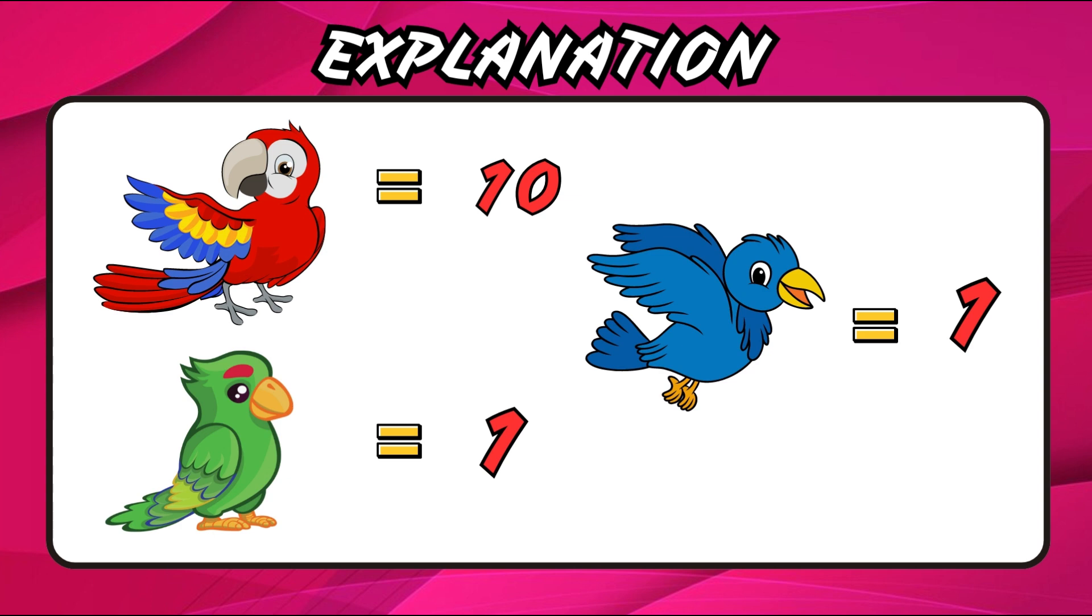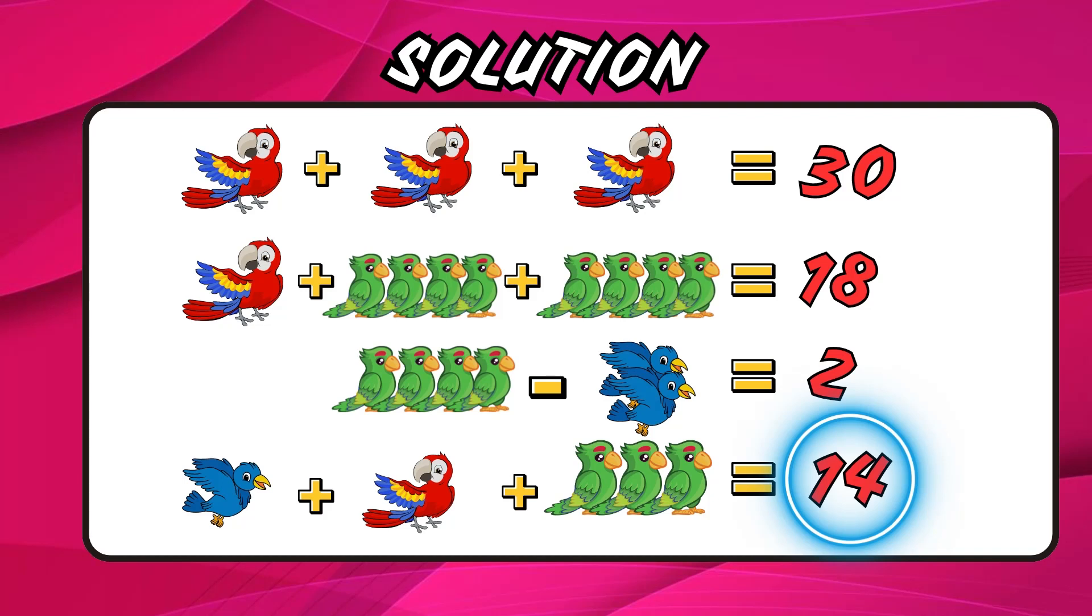The red bird holds the value 10, the green bird is 1, and the blue bird is also 1. Great, you figured it out. Add the values 1 plus 10 plus 3 equals 14.